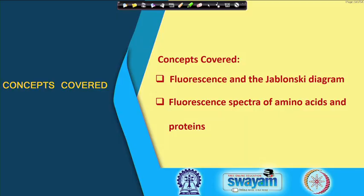In our discussion on fluorescence, we will understand what we mean by fluorescent spectroscopy, what is meant by the Jablonski diagram, and the fluorescence spectra of specific amino acids and proteins — and what information we can obtain when we take a fluorescence spectrum.